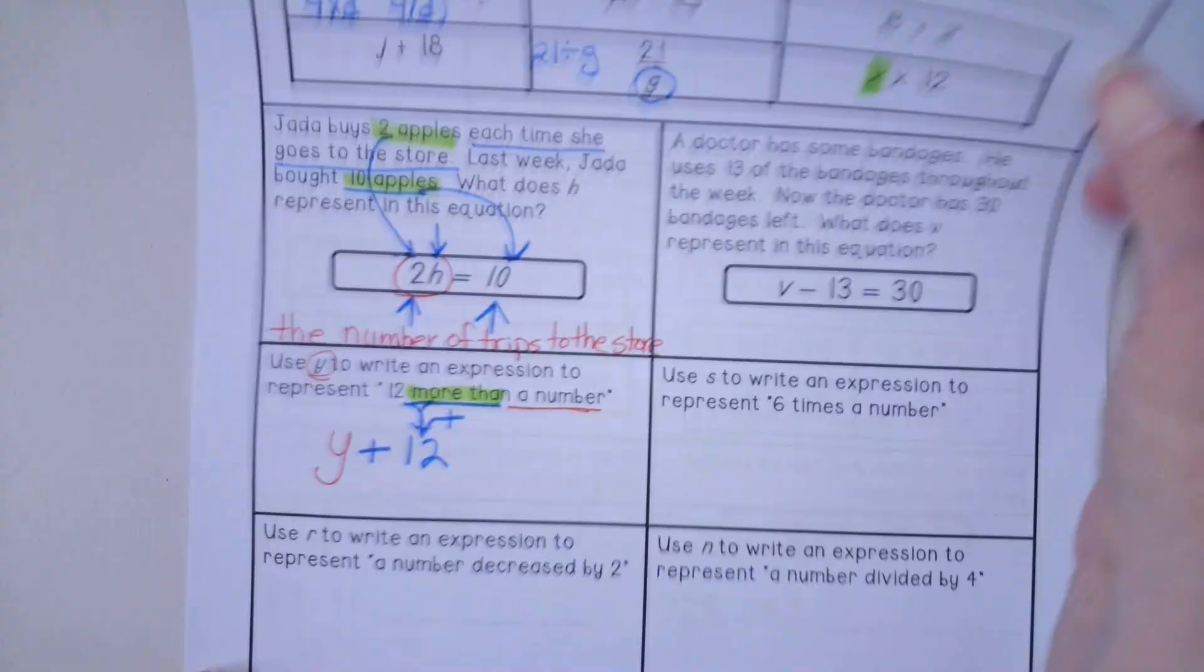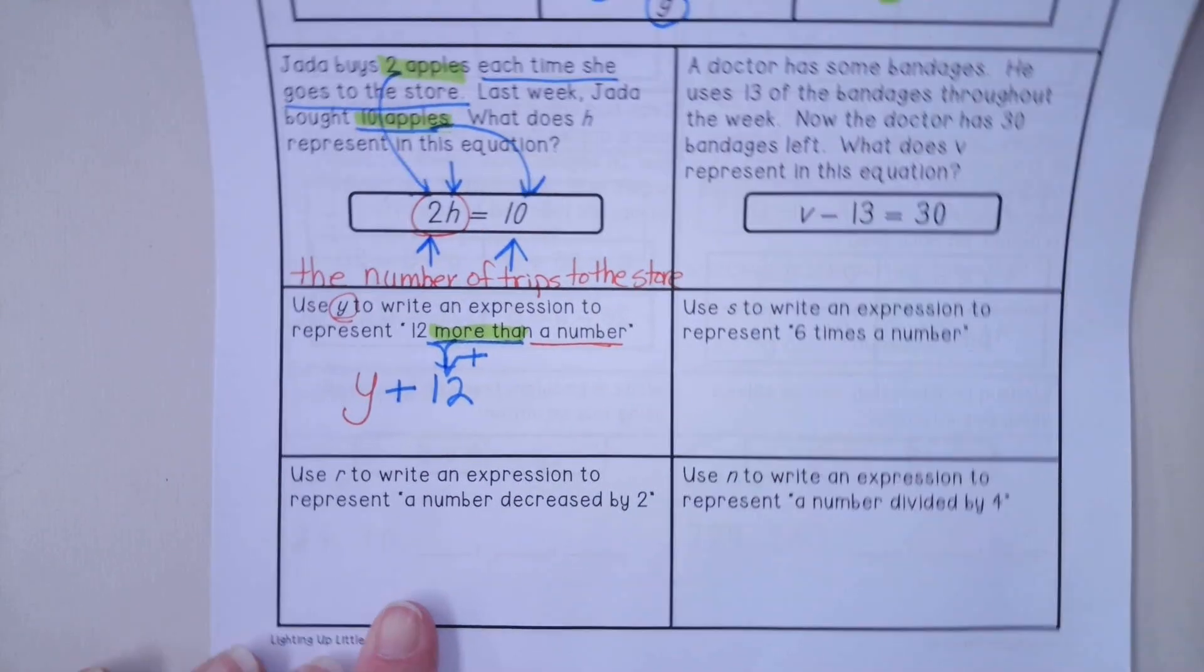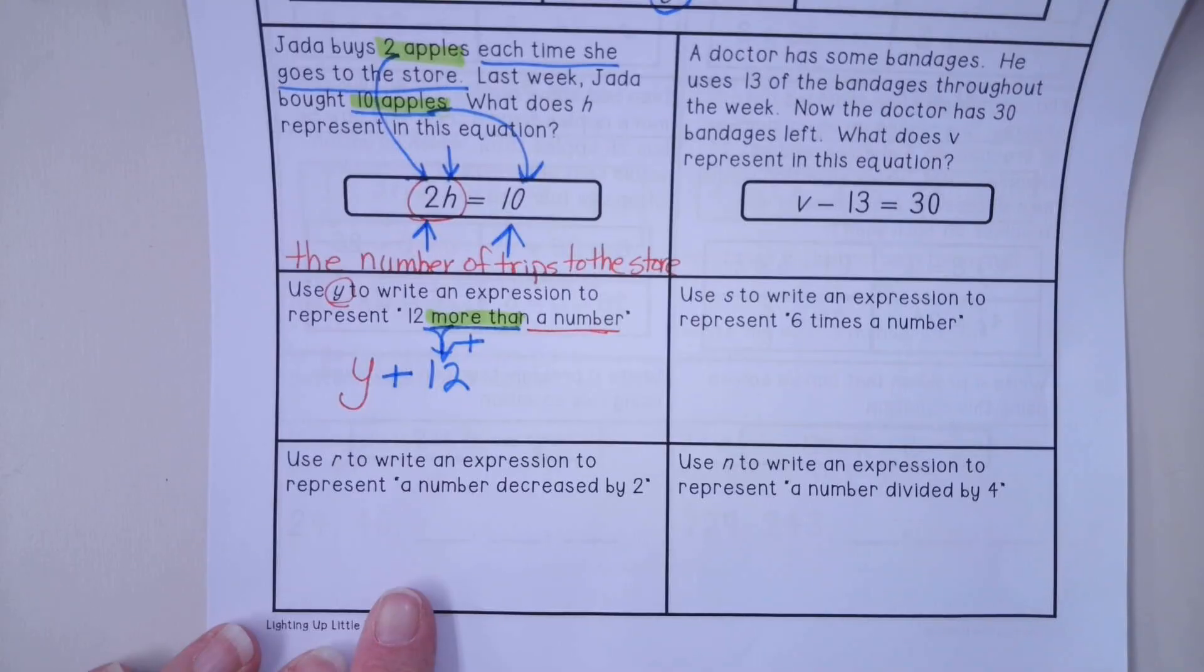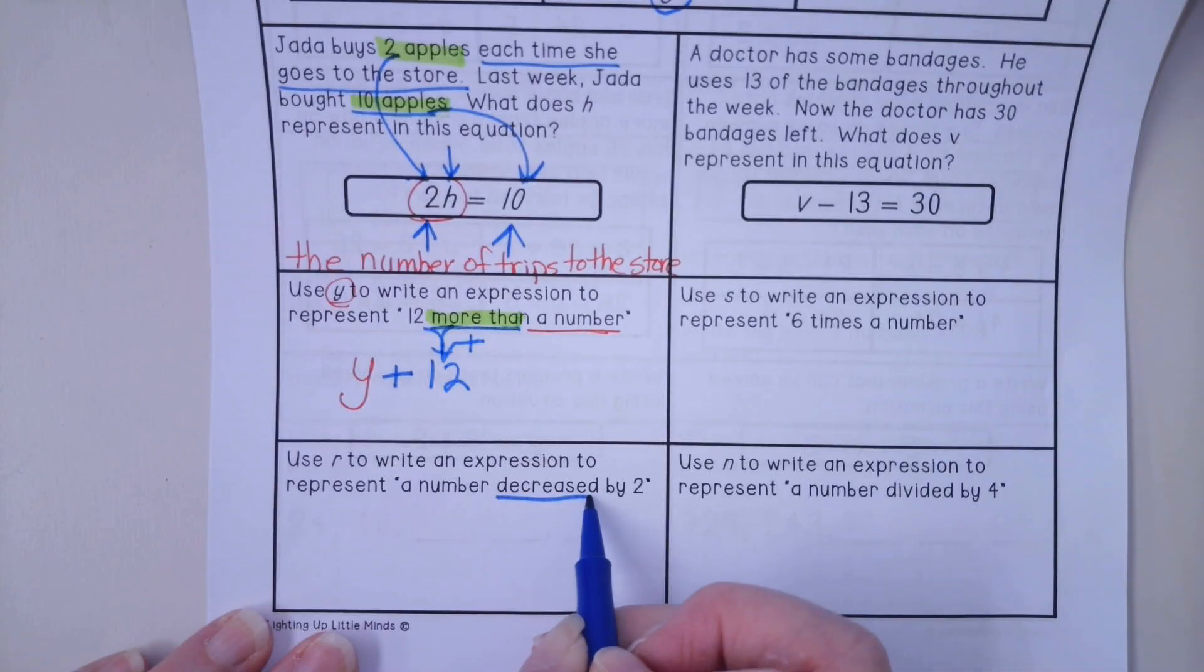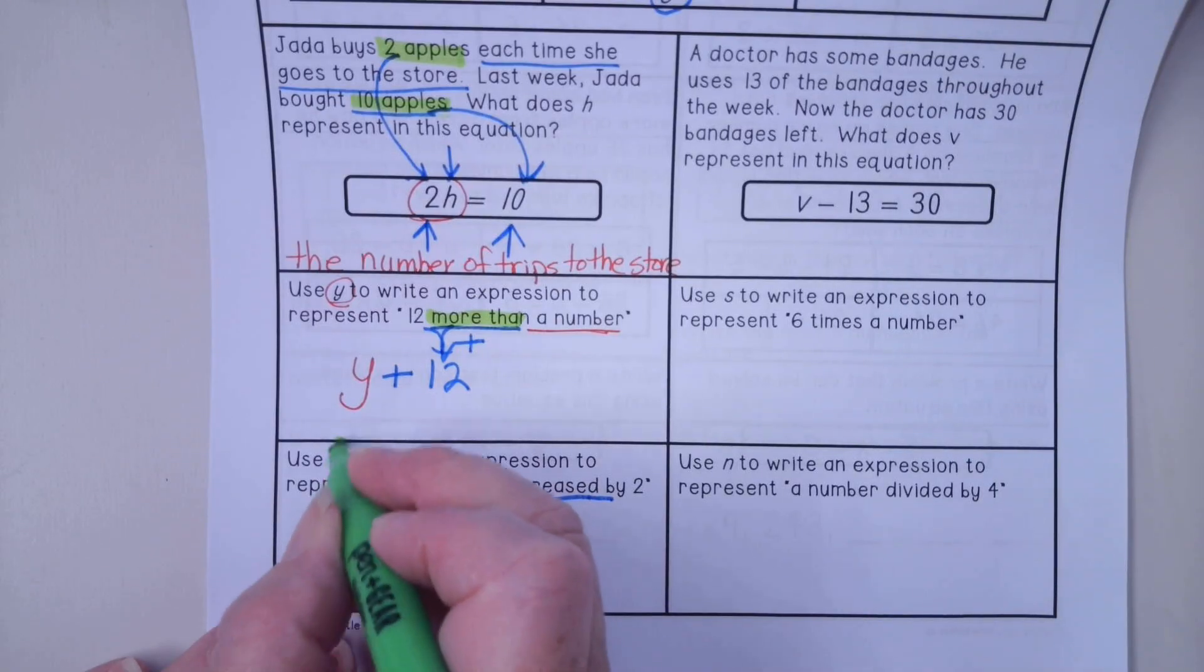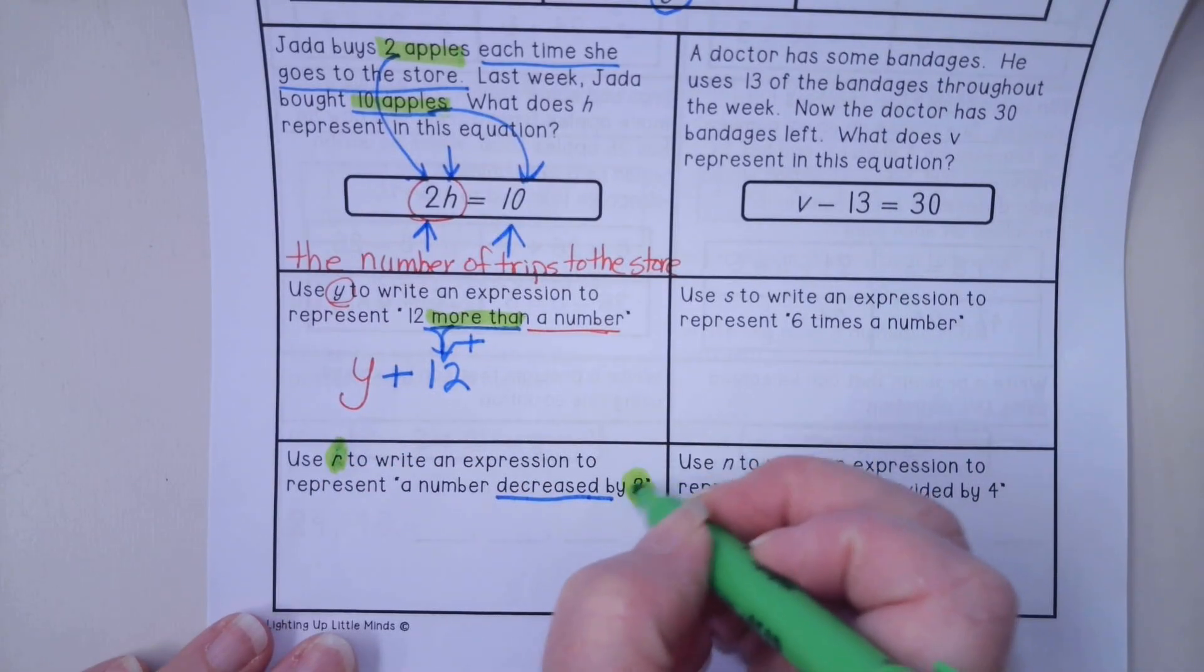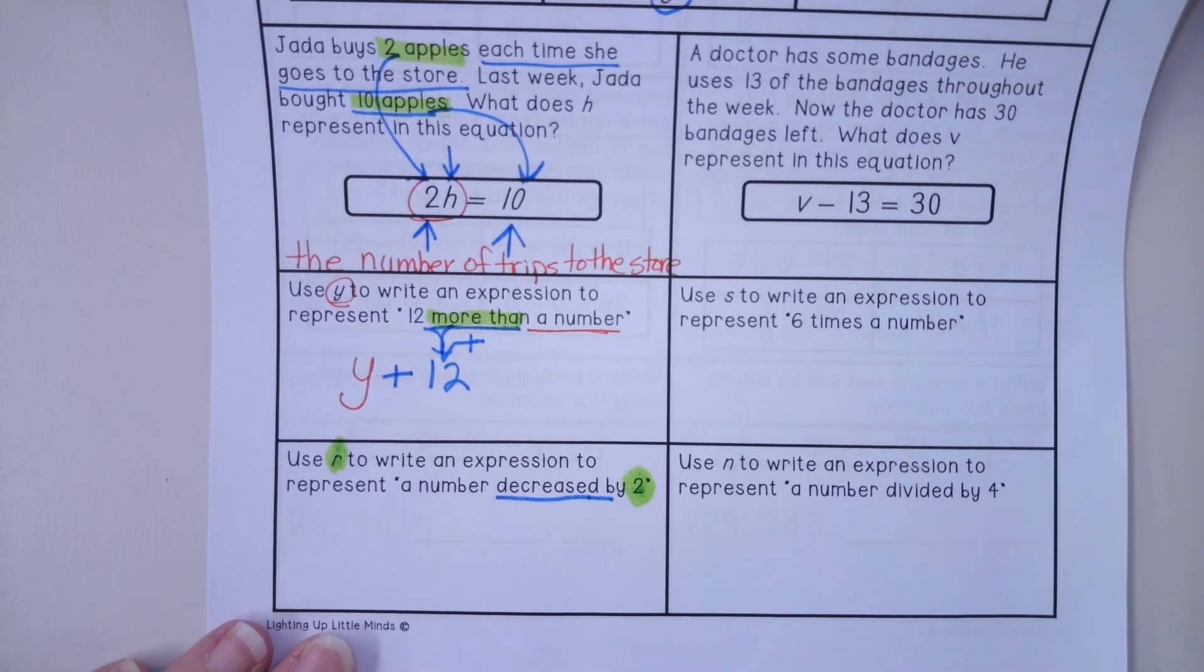The last expression for today is going to be this one here with the R. Use R to write an expression to represent a number decreased by 2. So we are decreasing by 2. Our variable is R, and we're changing by 2.